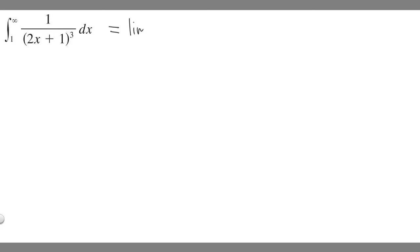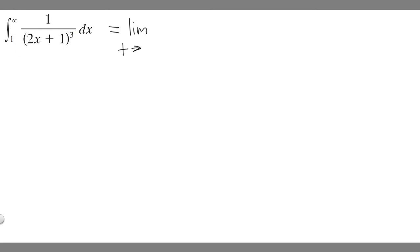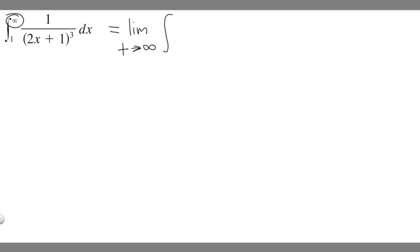We're going to say it is equal to the limit, and then choose an arbitrary variable such as t. So as t approaches infinity — because we have a definite number like 1 on the lower bound and infinity on the upper — the limit as t approaches infinity, and then just rewrite your integral. Instead of infinity, put a t. So we can say from 1 to t of 1 over 2x plus 1 cubed dx.